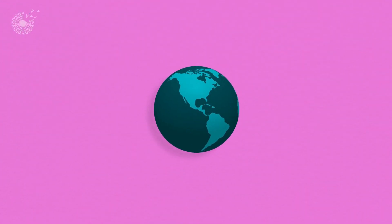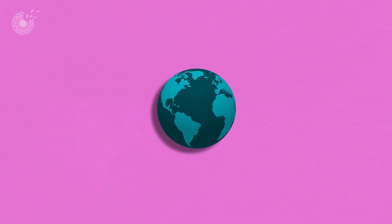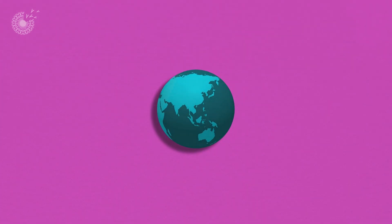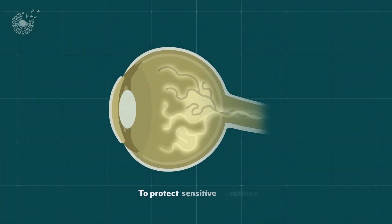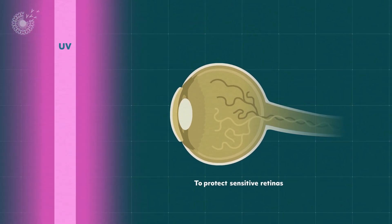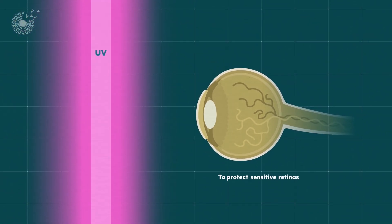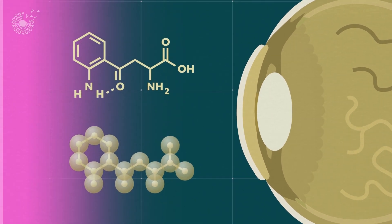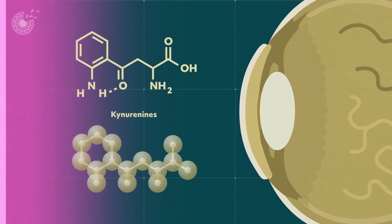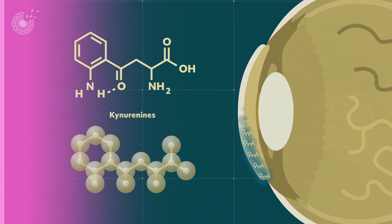So the global search for new, safer sunscreen is on. But the answer might be right before our eyes. Actually, right in our eyes. To protect our sensitive retinas from UV damage, humans have evolved to produce our own excellent sunscreen. It's a suite of chemicals called kynuranines that concentrate in the lenses of our eyes.